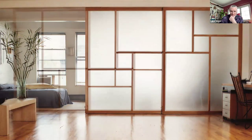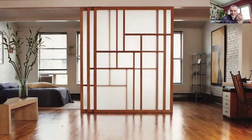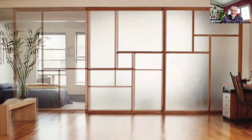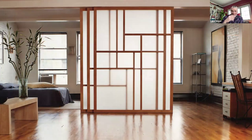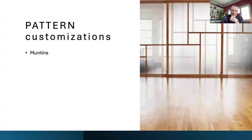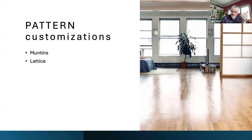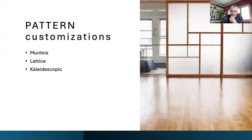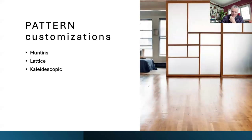Now jumping into pattern customizations. This is a gif of the original system that started the company over 20 years ago — six-by-eight panels with a muntin pattern playing with translucent acrylic and allowing light and shadow to interplay between the different layers. This is a very affordable thing you can do with RADOR. The sky's the limit — you can draw up your own ideas. The different customizations you can do with patterns are: muntins, lattice, and kaleidoscopic. The kaleidoscopic is when there are multiple panels that interplay.